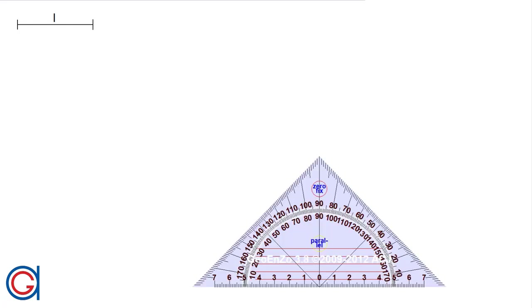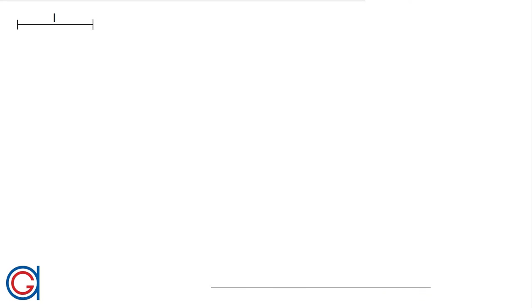The first thing we need to do is to draw a horizontal line at the bottom of our screen, as can be seen here, and on the left side of this line we will mark a point A.